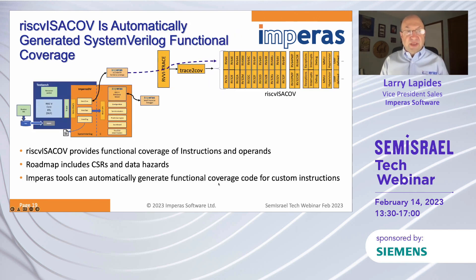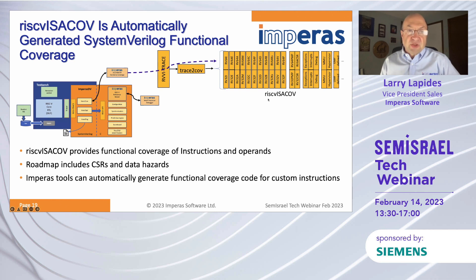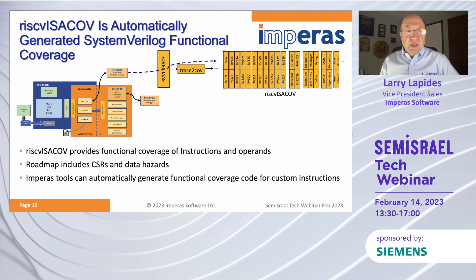Looking at the block diagram again, there's the functional coverage module. The RVVI trace feeds into the trace-to-coverage verification IP, which produces these functional coverage modules. We actually have a tool that generates this automatically. We're providing functional coverage of instructions and operands, with the roadmap including CSRs and data hazards. The Empiris tools can also automatically generate functional coverage code for custom instructions — that's a pretty nice benefit.